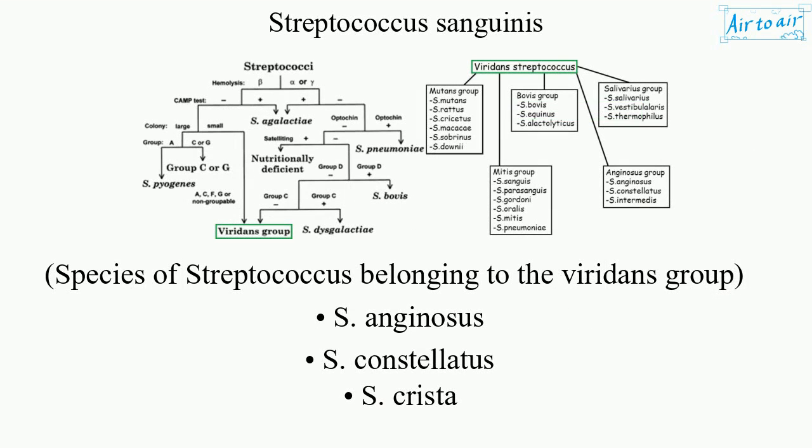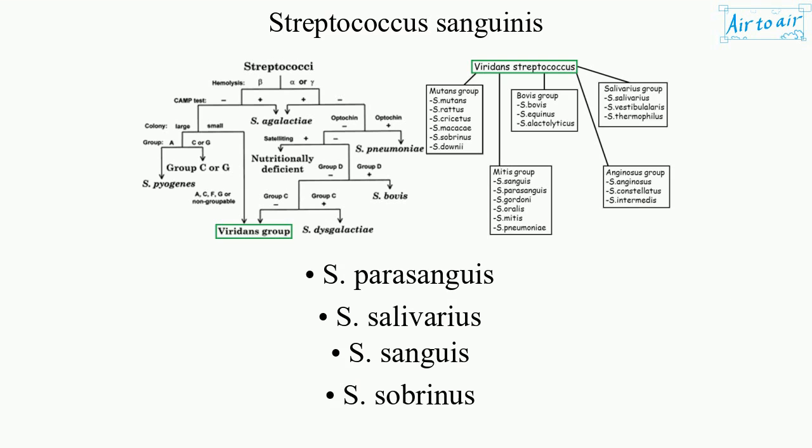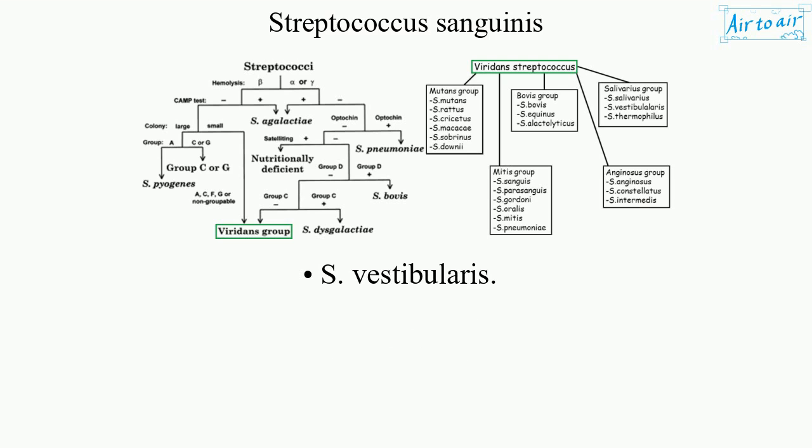Species of Streptococcus belonging to the viridans group include: S. anginosus, S. constellatus, S. cristae, S. gordonii, S. mitis, S. mutans, S. oralis, S. parasanguinis, S. salivarius, S. sanguinis, S. sobrinus, and S. vestibularis.